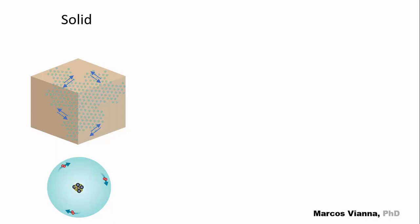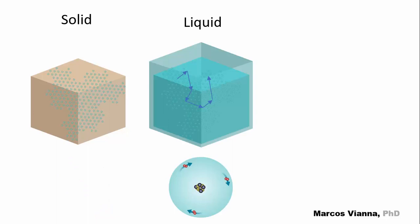In a liquid, the atoms are not so strongly linked to one another, so they can move to other places. In this way, the liquid can't keep its shape, but it keeps its volume.